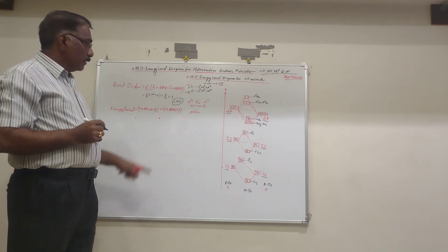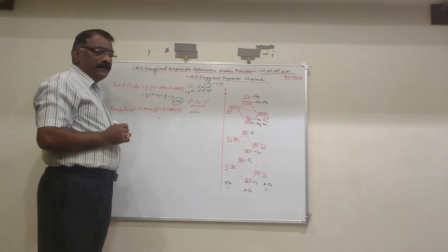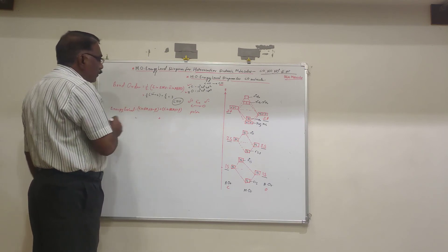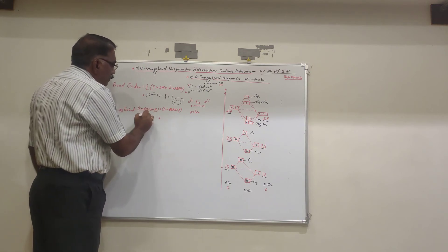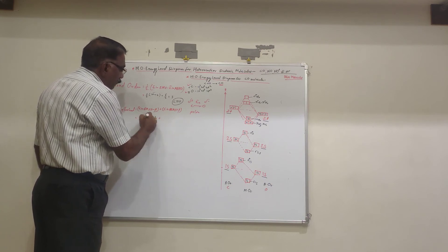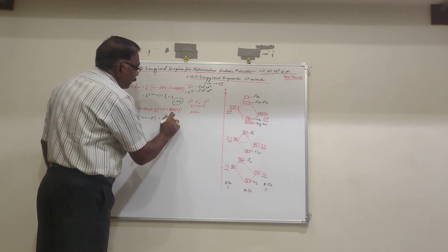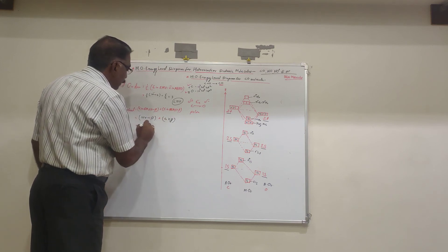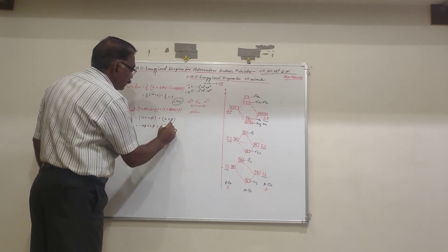The molecule is stabilized and energy is evolved. The stabilization energy, that is the electronic energy, equals: electrons in BMO × (−β) + electrons in ABMO × (+β) = 10 × (−β) + 4 × (+β) = −10β + 4β = −6β. So this molecule is stabilized by −6β amount of energy.